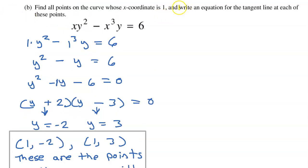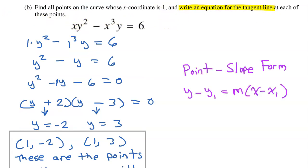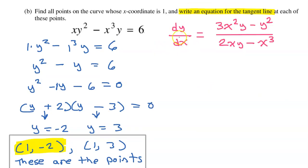But now we need to write an equation for the tangent line at each of these points. When they ask us to write the equation of a line, we almost always use point-slope form. So we only need two things: a point and a slope. Well, we already have a point — the point of tangency — so in each case, all we really need is the slope. Let's use the equation for dy/dx that we found in part A. This will give us the slope at any point, including (1, -2).